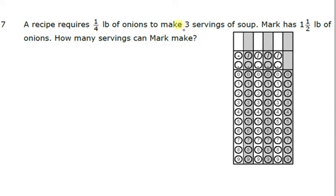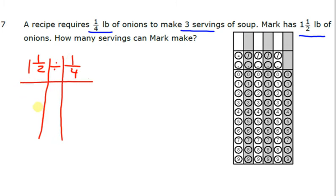All right, let's try the next one. A recipe requires one-fourth a pound of onions to make three servings of soup. Mark has one-and-a-half pounds of onions. How many servings can he make? All right, so first thing we need to do is divide. Now you can keep them as a fraction, or you can make them decimals. So in this example, I'll make them a decimal. Actually, I'll do both in this example. So let me do it with fractions first. So 1 and one-half divided by one-fourth. We're going to do our tic-tac-toe. And we're going to do keep, change, flip.